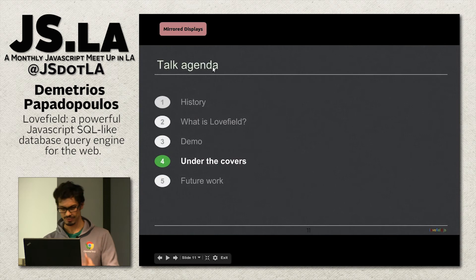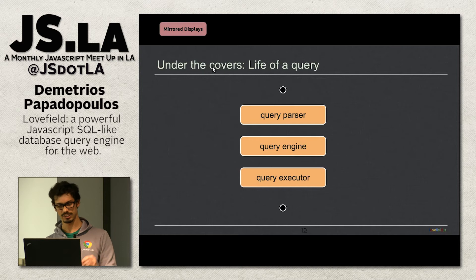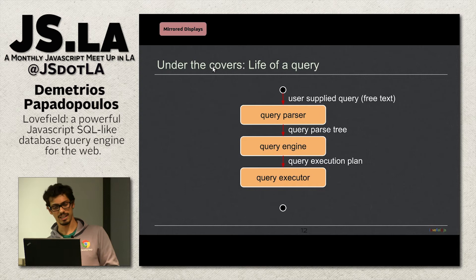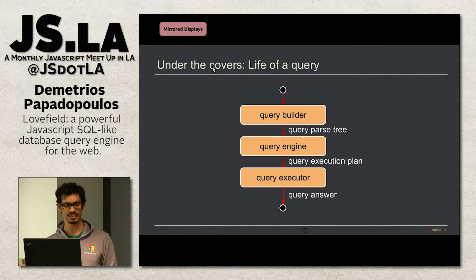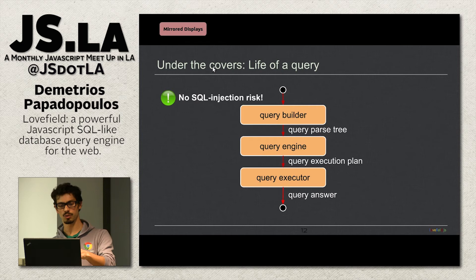Going back to the presentation — let's look under the covers. A typical database management system has a query parser, query engine, and query executor. The user provides a query in free text; it's parsed into a tree, converted to a query execution plan describing exactly how to get the answer, and the executor returns the answer. In Love Field it's very similar, except there's query building instead of parsing — which means there's no SQL injection risk.